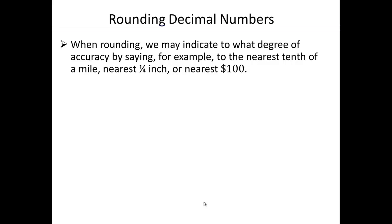All right. Rounding decimals. When you're rounding, we want to know to what degree of accuracy you are giving us the number. So nearest tenth of a mile, or nearest quarter of an inch, or nearest 100. That helps us communicate with each other.